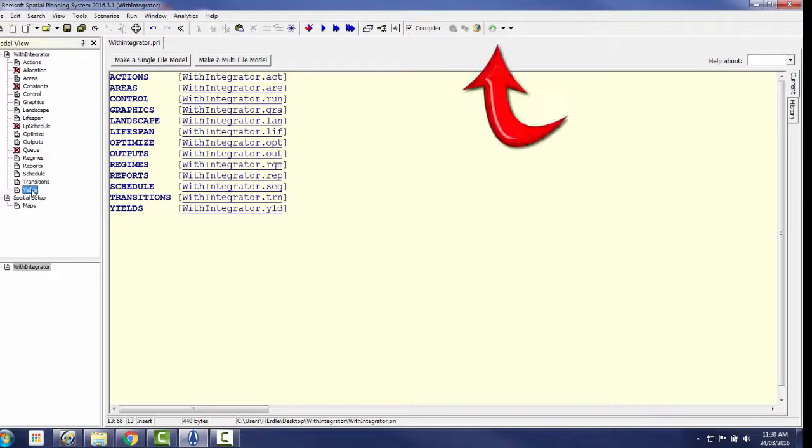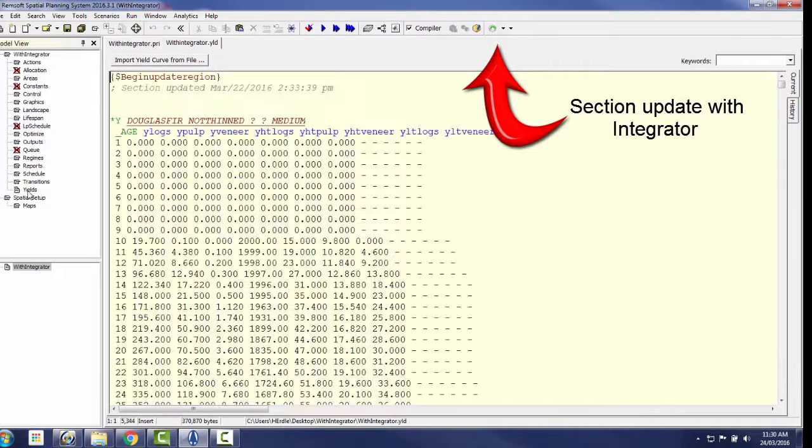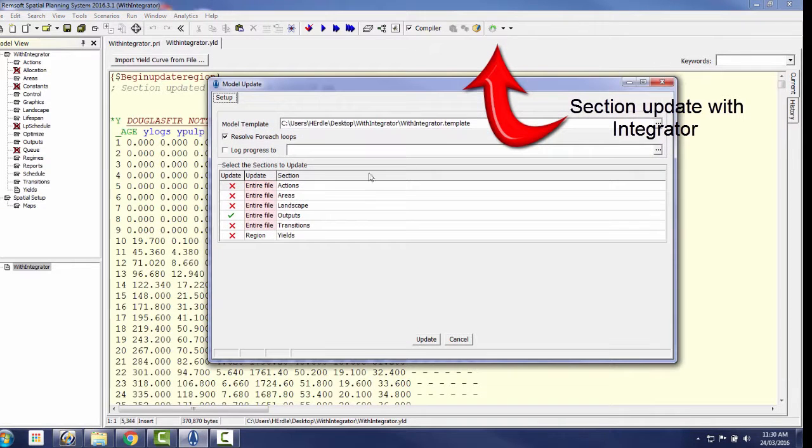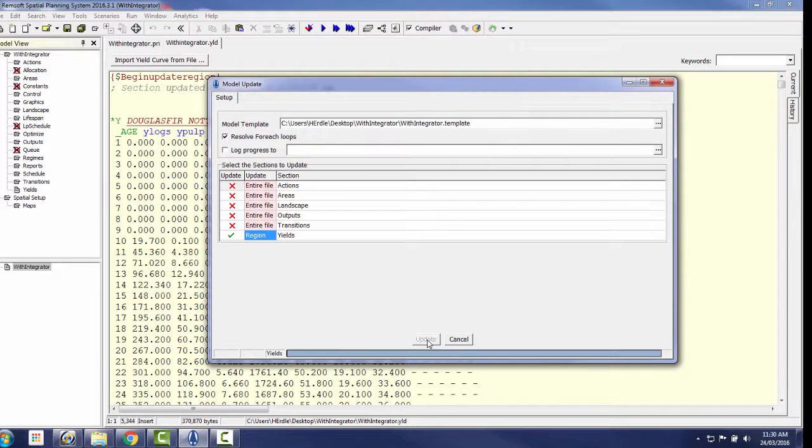Now, we'll see Kevin easily complete the task in just 28 seconds, thanks to Integrator's simple update function. With Integrator, it doesn't matter if there is one error or 50.